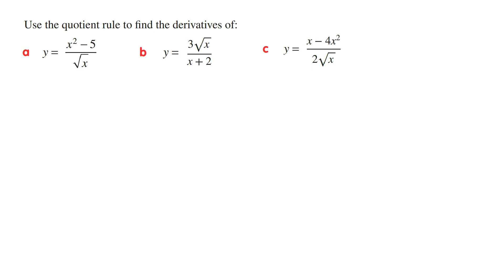Hey guys, in this video I'm going to show you how to use the quotient rule to find the derivative of functions, and I'm going to walk you through three examples where we have square roots. Looking at part A, we've got y is equal to x squared minus 5 divided by the square root of x.